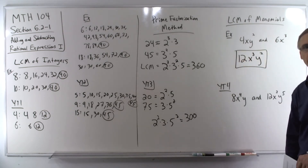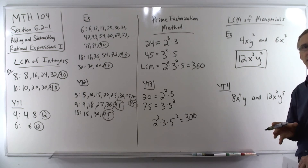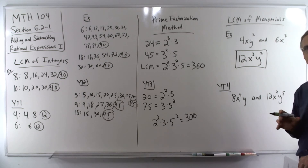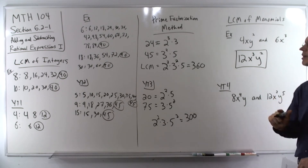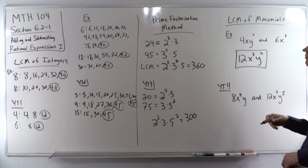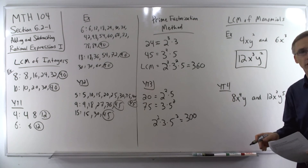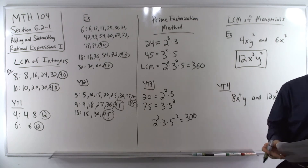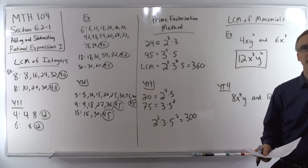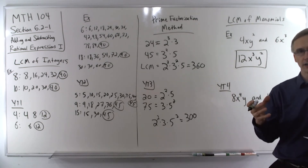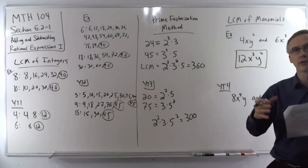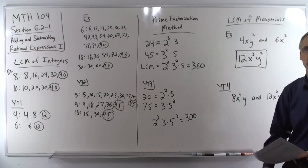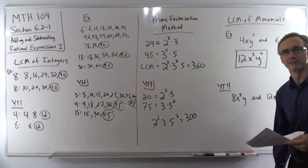Make sure to keep this straight from GCF. For GCF, we're selecting the smallest exponent. For LCM, we're selecting the larger exponent. That makes sense because factors are smaller and multiples are bigger, so you need more exponents.